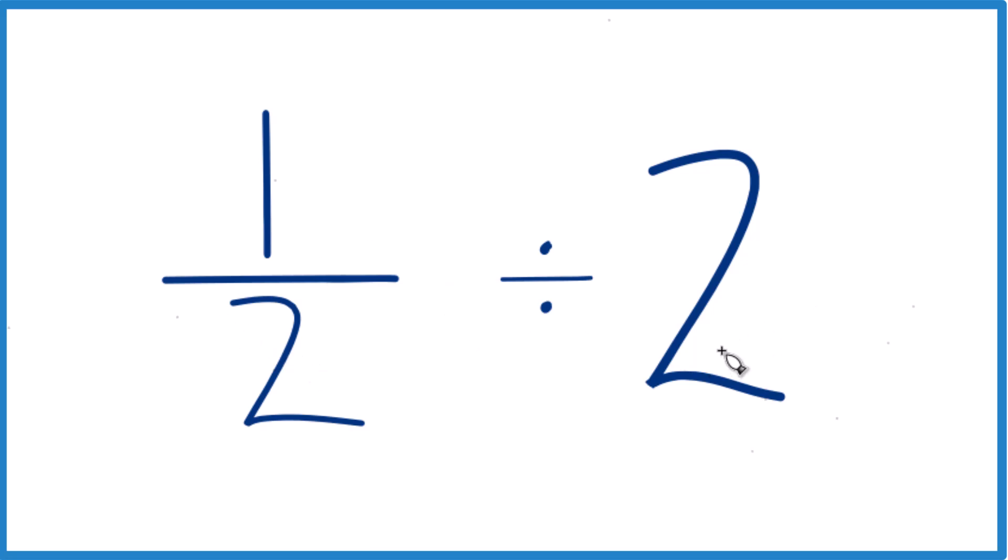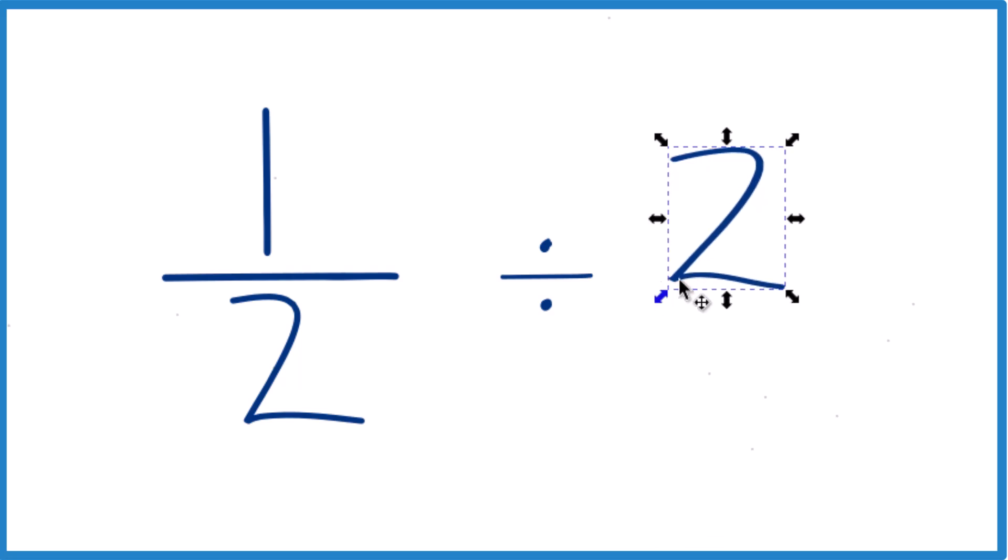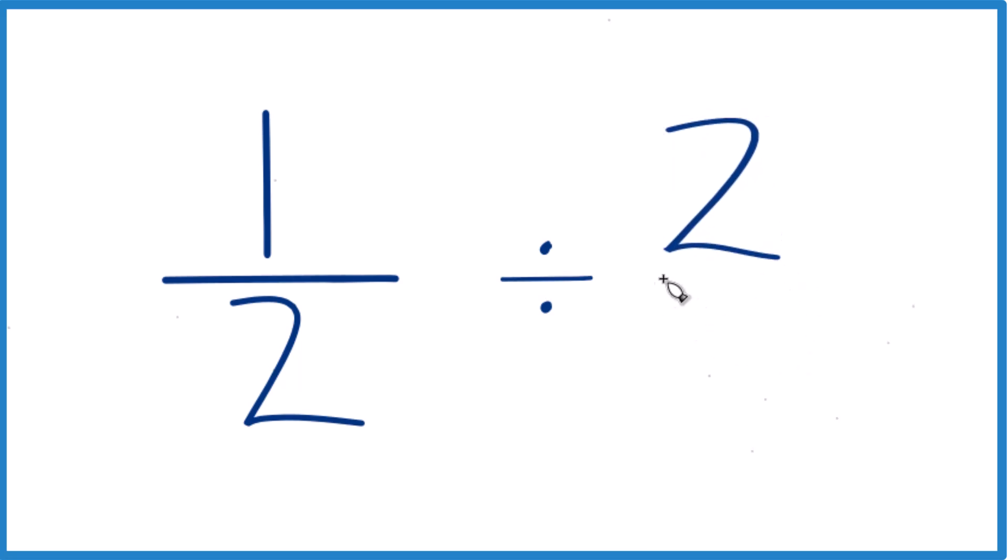Next, instead of two, what's kind of helpful is if we call this two over one, it's still two. It's just two divided by one. So it's still two, but now everything lines up nice.